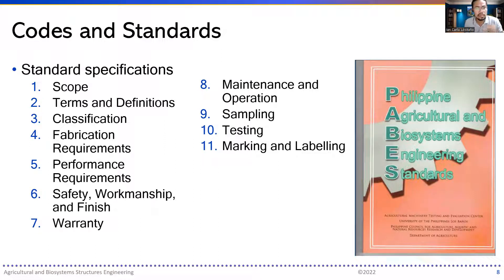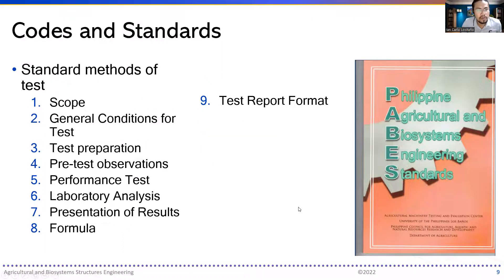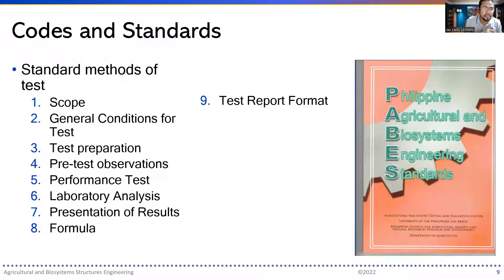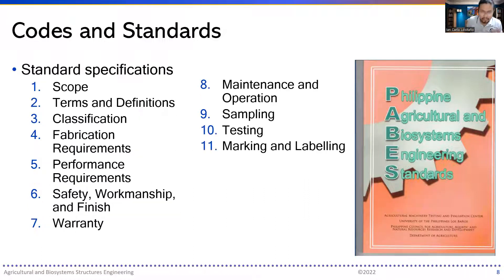Standard specifications include scope, terms and definitions, classification, fabrication requirements, performance requirements, safety, workmanship and finish, warranty, maintenance and operation, sampling, testing, marking, and labeling. Standard methods of test cover scope, general conditions for test, test preparation, pre-test observations, performance test, laboratory analysis, presentation of results, formula, and test report format. The standard specifications identify portions of the structure that need to be specified, while the standard methods of test are used to test those identified specifications.